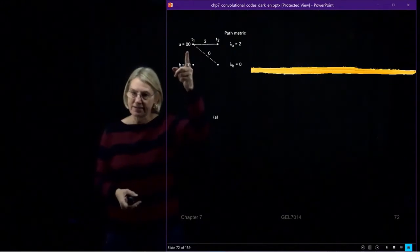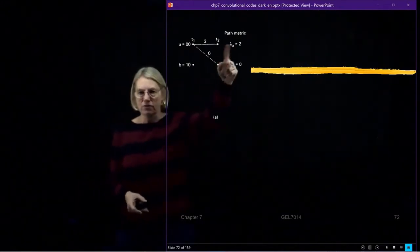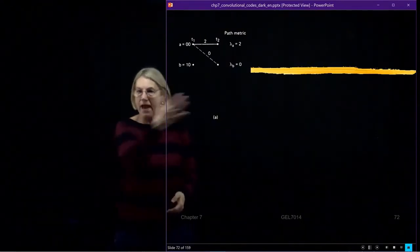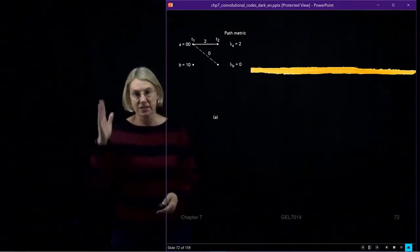I assume I started at state A. I could have gone to state A or gone down to state B. I calculate the branch metrics, and the path metrics are the same thing here. It's easy.